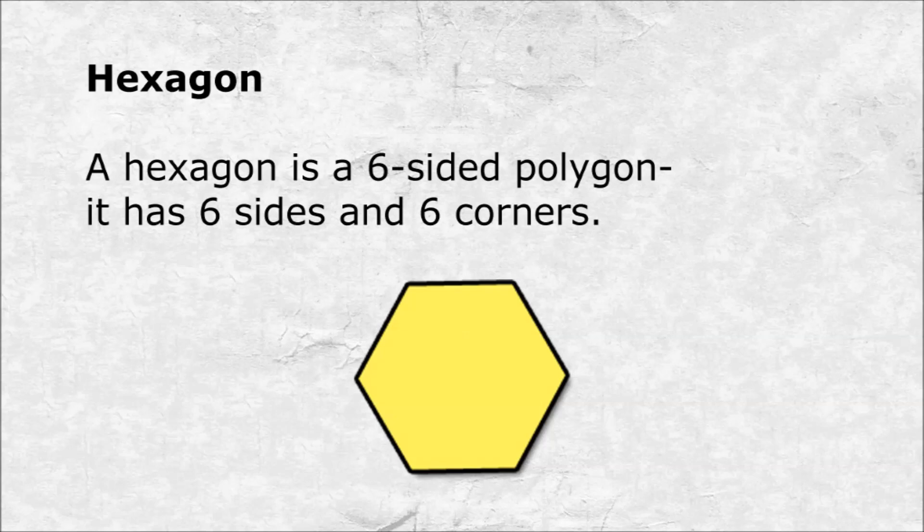Hexagon. A hexagon is a six-sided polygon. It has six sides and six corners.